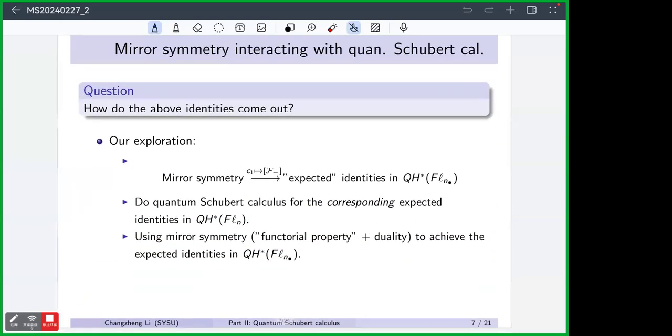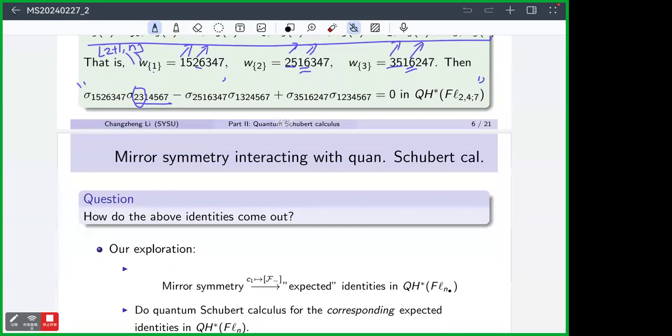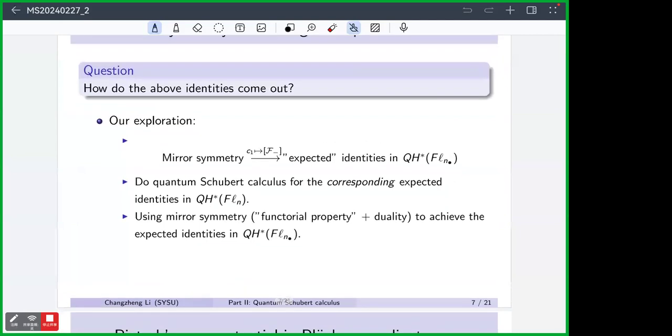And therefore, our theorem in this special case tells us the identity of this form. So the question is that: How do this identity come out? Apparently, we could have a lot of identity among the product of Schubert classes. Why we care about this kind of identities? But how do we find some meaningful identities? So our exploration is in this way.